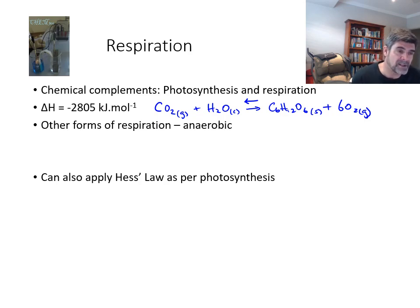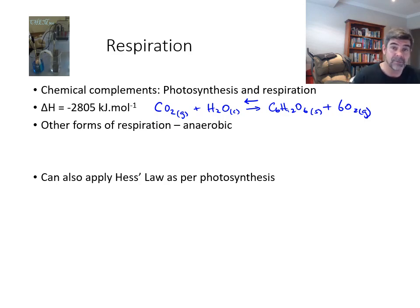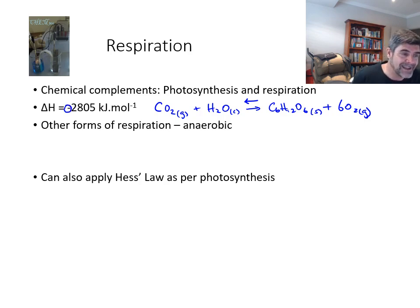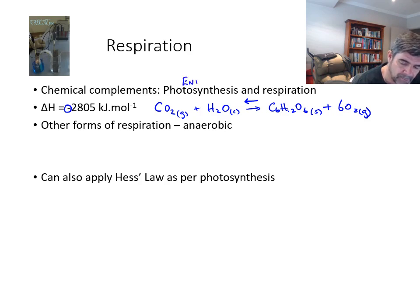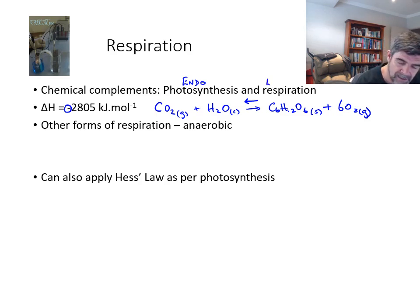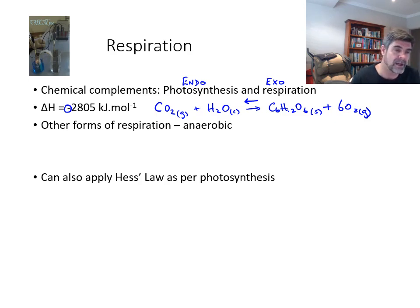As you might expect from the process we saw in the previous video when we were doing the calculation for photosynthesis, if we follow all of the steps exactly as we did for photosynthesis but exactly reversed as we would expect for respiration, then we would find that the value calculated would have exactly the same magnitude — 2,805 kilojoules — but would have a negative sign rather than a positive sign. So the process of photosynthesis is an endothermic process because it requires the input of energy, whereas respiration is an exothermic process as it releases energy in an available form for the cell to use to carry out other processes.